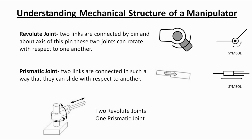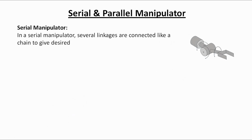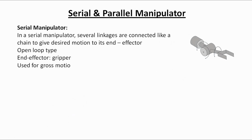Moving further, the manipulator can be of two types: serial manipulator and parallel manipulator. In a serial manipulator, several linkages are connected like a chain to give the desired motion to its end effector. It is of open loop type. The end effector of a serial manipulator can be a gripper, a welding torch, etc. It is used for gross motion, not for very precise motion.